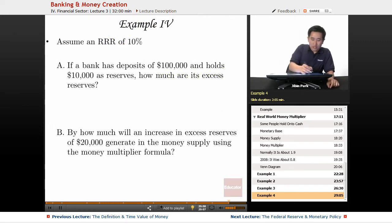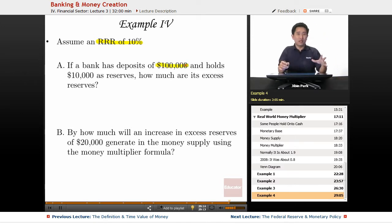Final example, let's assume this reserve ratio of 10%. So if a bank has deposits of $100,000, so that means it's a liability of $100,000, and holds $10,000 as reserve, so that's the required reserve ratio, how much are its excess reserves?